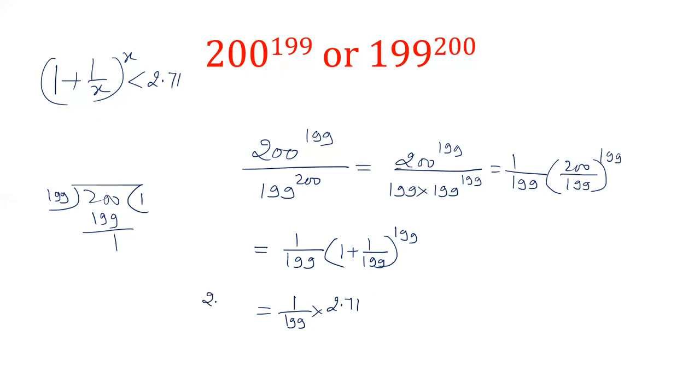And the left hand side of this term is 200 power 199 on 199 power 200. So let's finally write down 200 power 199 on 199 power 200 is less than 2.71 on 199.